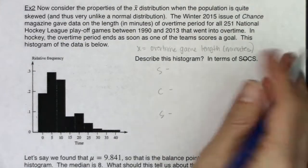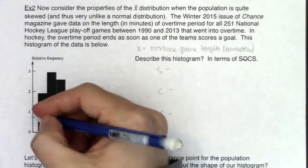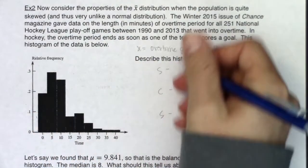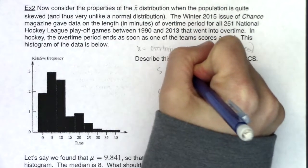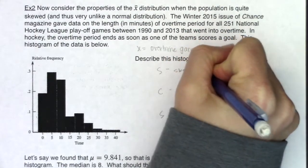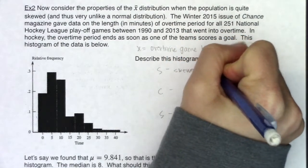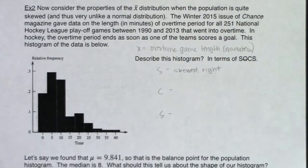Let's SOCS this up — again, chapter two problem. If I look at it, the shape is definitely skewed right. There's no way to say roughly symmetric here, and it's also not skewed left — it is skewed right.